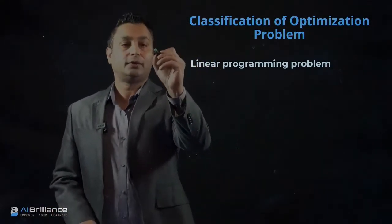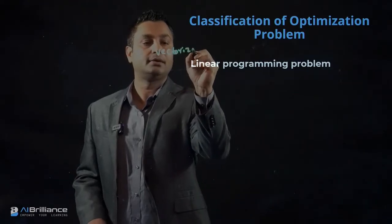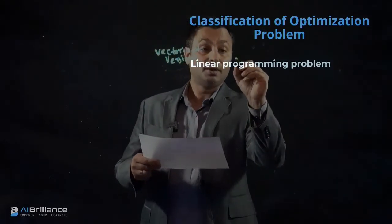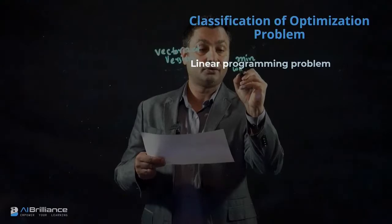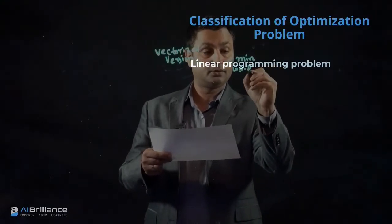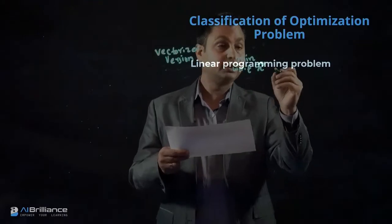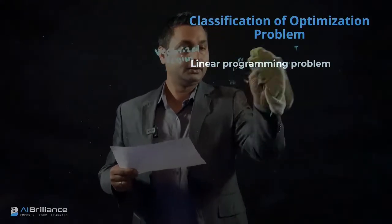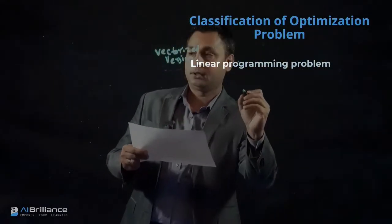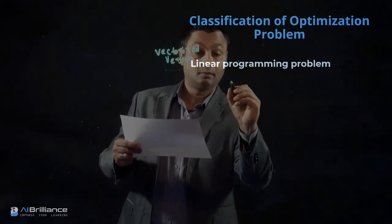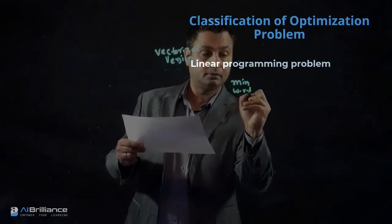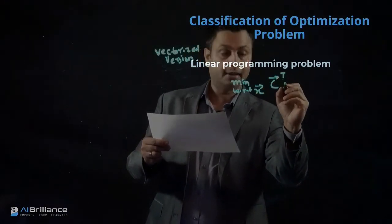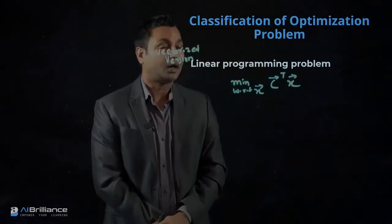The vectorized version of this linear programming problem is as follows. We minimize with respect to x — the vector x — the coefficient vector c transposed, multiplied by x. Let me write it clearly: minimize with respect to x, we have c-transpose times x, and that gives my objective function.